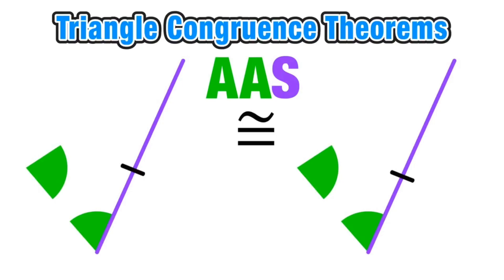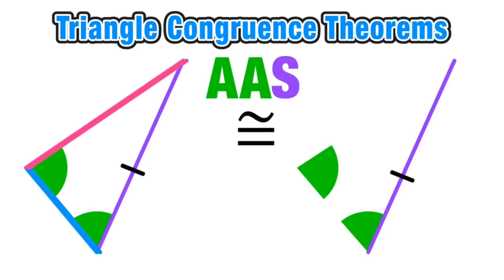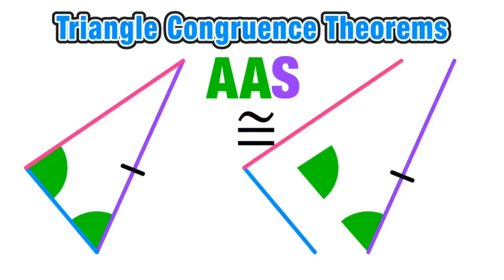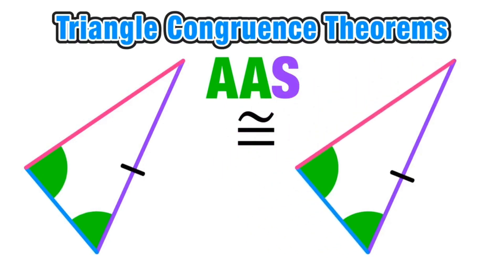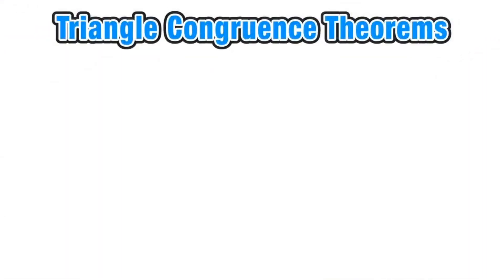Even though the order is different, we still have enough information to prove that these two triangles are congruent, which means their corresponding sides and corresponding angles have the same measure.